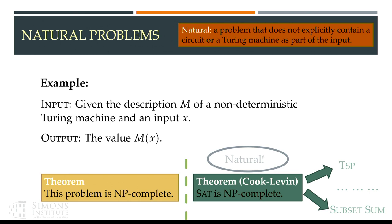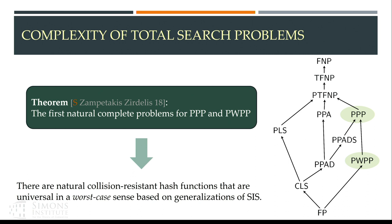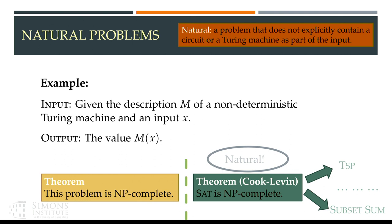The first problem is non-natural because it has a non-deterministic Turing machine as input, whereas SAT is natural. Regarding whether this is a formal definition: the definition says problems shouldn't contain an explicit description of a Turing machine in the input. It's not a fully technical definition, since SAT can describe Turing machines — you can think of SAT as having a circuit in it.